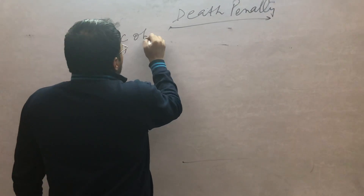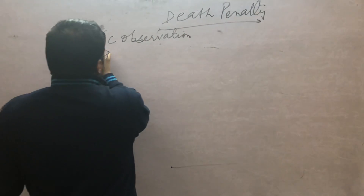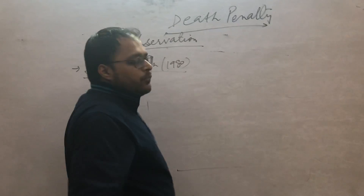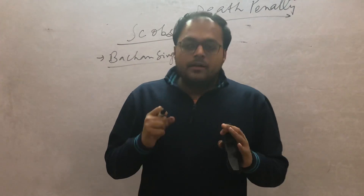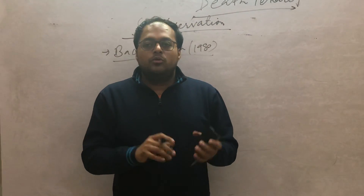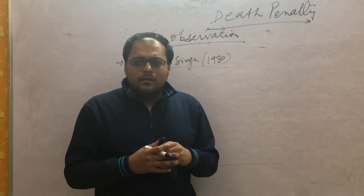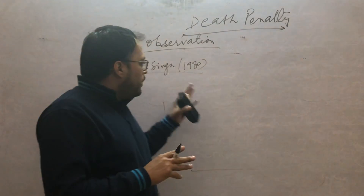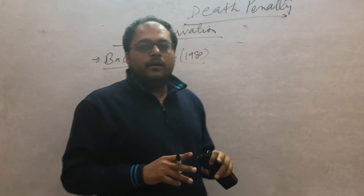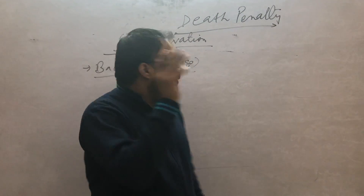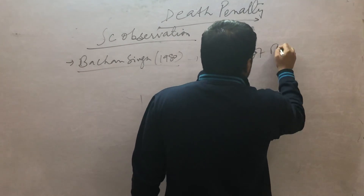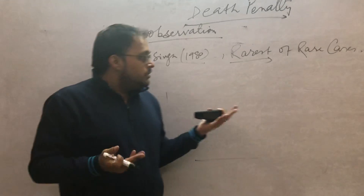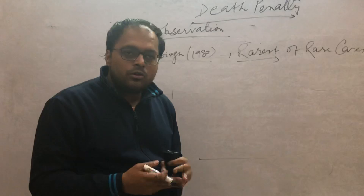Now, Supreme Court observations. In the Bachchan Singh case — the first case with respect to death penalty, in 1980 — the Supreme Court held that there should be a doctrine of 'rarest of the rare case.' The reason was that some cases are of such heinous nature which shock the collective conscience of society. However, the Supreme Court did not elaborate what the guidelines for the rarest of the rare doctrine should be.